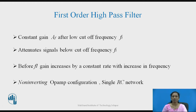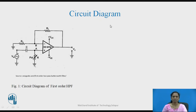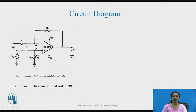For this we need an op-amp, as we are learning active filters, and that op-amp is configured in the non-inverting mode. A single RC network plays an important role in the high pass operation. Figure 1 shows the circuit diagram for the first order high pass filter. The capacitor and resistor arrangement allows the high pass operation.